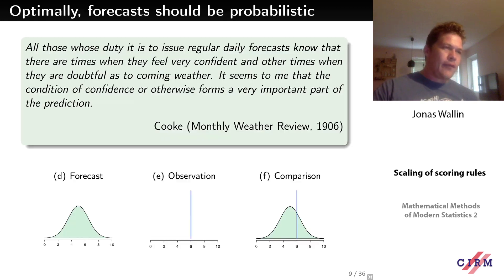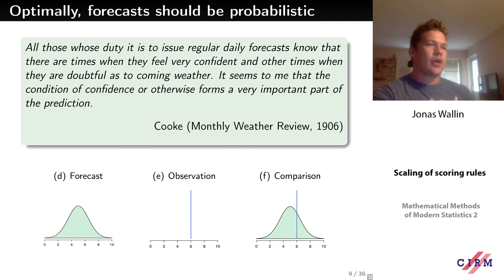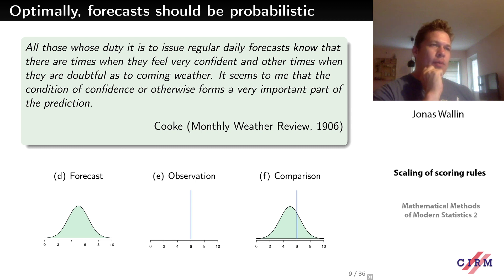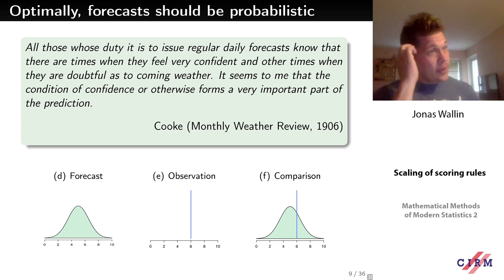This is nicely captured by a quote from a Monthly Weather Review paper from 1906: 'All those who issue regular daily forecasts know that there are times when they feel very confident and other times when they are very doubtful as to the coming weather. The condition of confidence forms a very important part of the prediction.' In other words, we should account for the uncertainty our probabilistic forecast assigns to an observation.